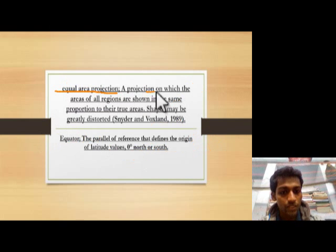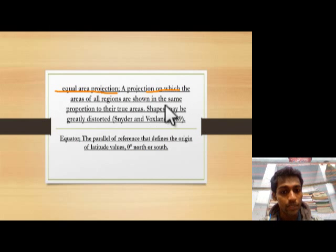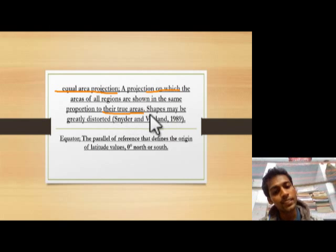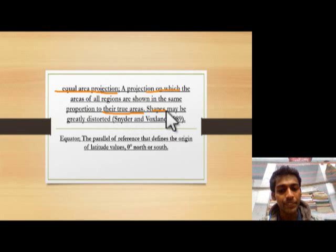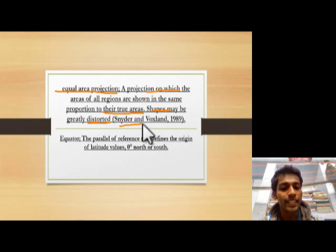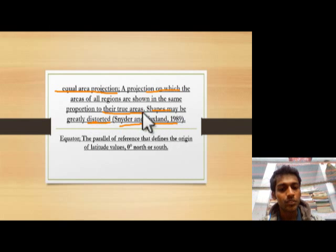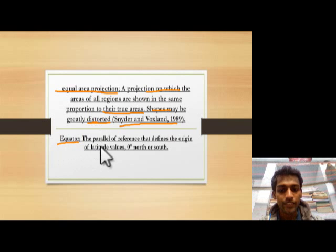Equal area projection: a projection on which the areas of all regions are shown in the same proportion to their true areas. Shapes may be greatly distorted. (Snyder and Voxland, 1989.)